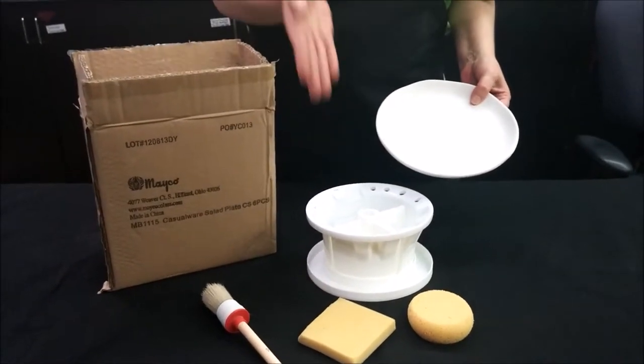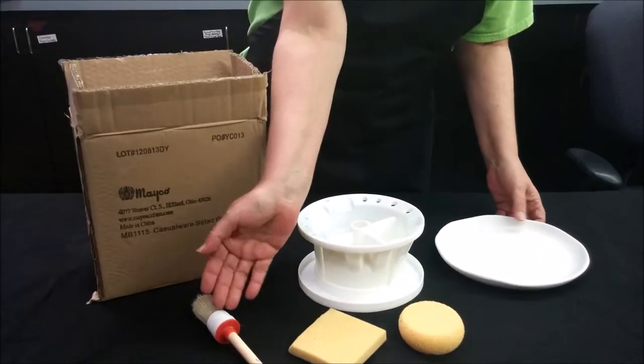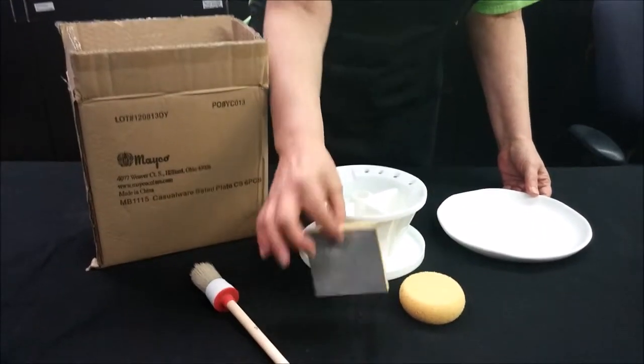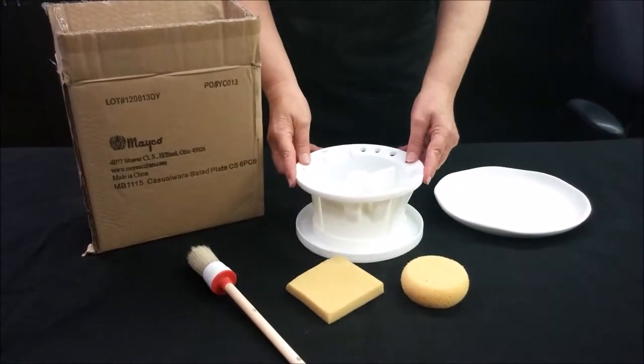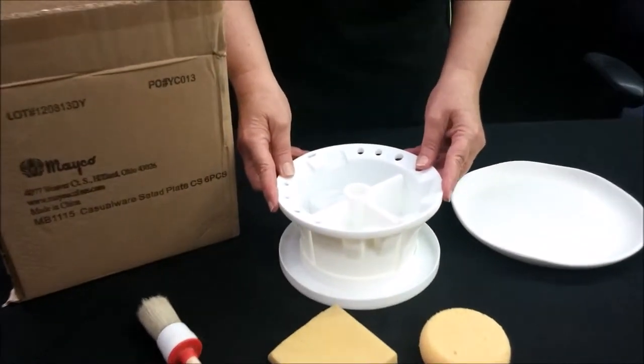Here are some of the tools that you'll need: a duster brush, a rubber grit scrubber, a synthetic sponge, and we like to use a brush basin with clean fresh water inside of it.